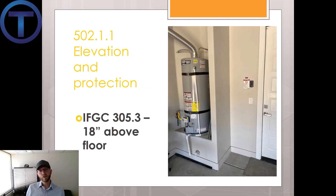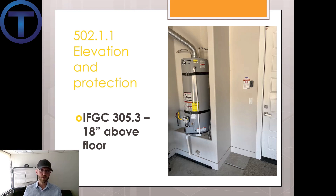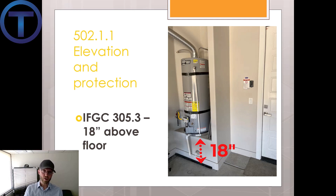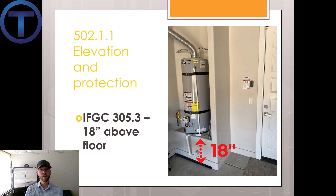The International Fuel Gas Code gives us more specific information. Section 502.1.1 covers elevation and protection, referring us to International Fuel Gas Code 305.3, which specifically states that a water heater in a garage or a place where there might be combustible fumes — gasoline specifically — must be elevated at least 18 inches above the floor. Here you can see a garage installation where they've built a platform so the ignition source is not at ground level. Gasoline fumes are heavier than air, so they settle to the floor, and by raising the water heater up we can hopefully avoid igniting those fumes.